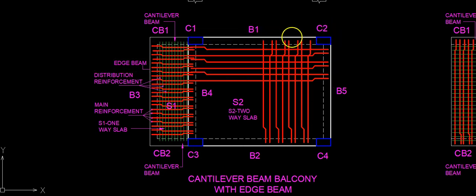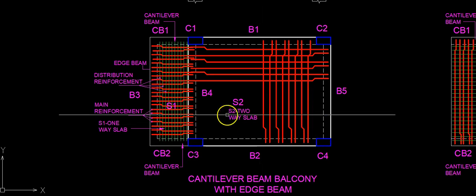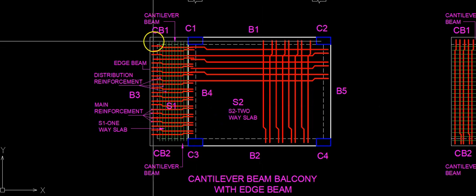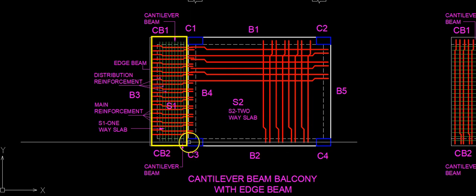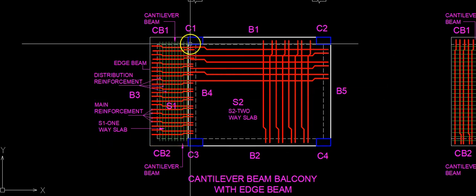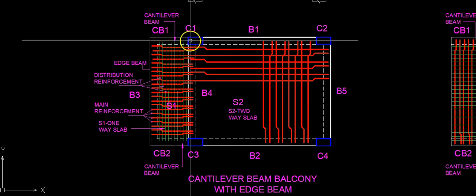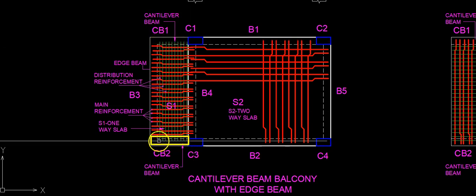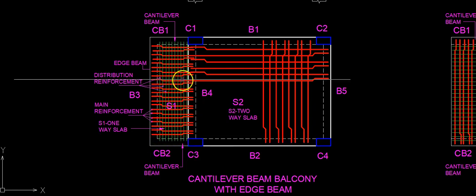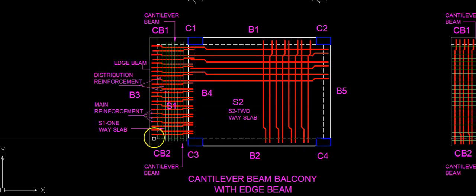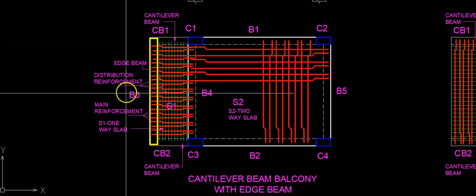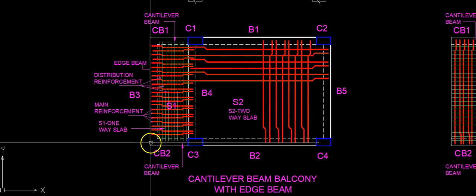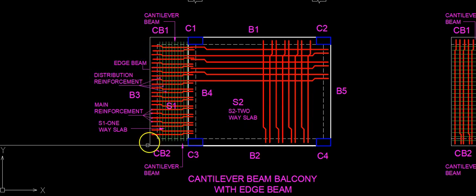This sketch shows a room which is bounded by columns C1, C2, C3, and C4. On one side there is a balcony which consists of cantilever beams coming out from column C1 — CB1 is one cantilever beam and CB2 is another. Connecting the cantilever beams is an edge beam, beam B3, which is not a cantilever but a simply supported beam supported by CB1 and CB2.